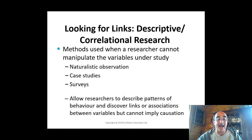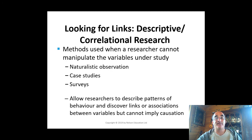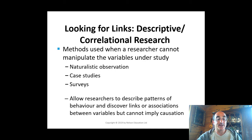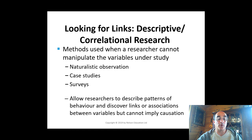Some of these descriptive methods include naturalistic observation, where a researcher engages in careful observation of behavior without intervening directly — for example, observing whether men run more red lights than women. In a case study, it is an in-depth investigation of an individual subject, for example a profile of a serial killer. In a survey, researchers use questionnaires or interviews to obtain specific information about subjects' behaviors. Descriptive or correlational methods allow researchers to discover links and associations between variables, but cannot imply causation.